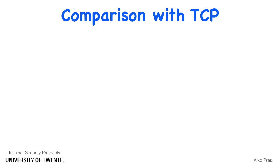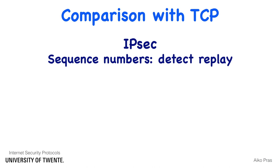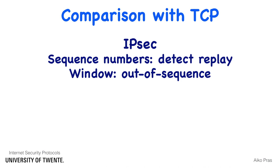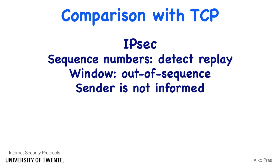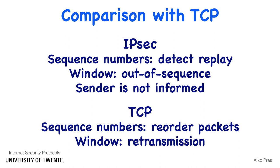Be aware that IPsec windows and sequence numbers have no relationship with TCP windows and sequence numbers. With IPsec, sequence numbers are maintained to detect replay attacks, and the IPsec window is needed to deal with out-of-sequence packets. The size of the window is determined by the receiver — the sender is not informed which sequence numbers have been received thus far, and the window size is not negotiated during the establishment of the security association. With TCP, sequence numbers are used to reorder out-of-sequence packets. The TCP window facilitates the retransmission of lost packets, the receiver sends acknowledgements to the sender, and the window is also used by the sender to perform flow control.